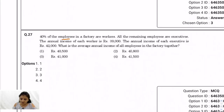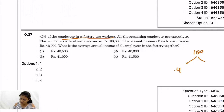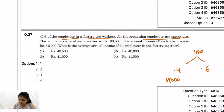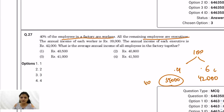Question 27: 40% of employees in a factory are workers; assume 100 total employees, so 40 are workers with annual income 39,000 and 60 are executives with annual income 42,000. Average annual income = (40×39,000 + 60×42,000) / 100 = (1,560,000 + 2,520,000) / 100 = 4,080,000 / 100. The correct answer is 40,800 — option 4.